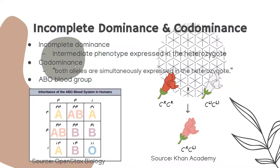An example of incomplete dominance: pure red crossed with pure white produces pink offspring. Co-dominance is different — both alleles are simultaneously expressed in the heterozygote. The most famous example is the ABO blood group: an individual with both A and B alleles expresses blood type AB.